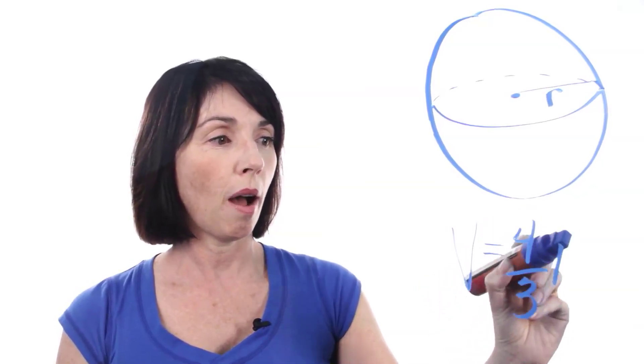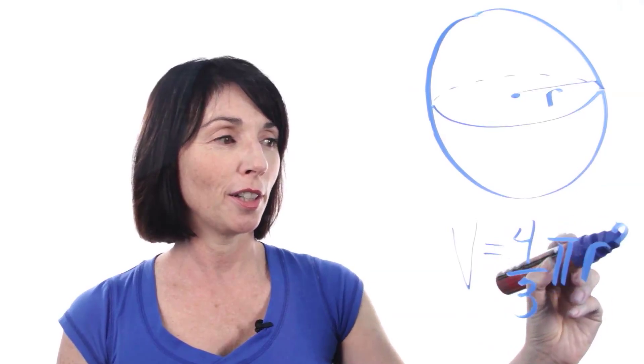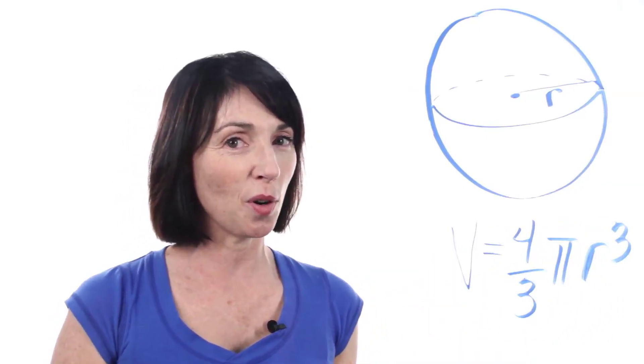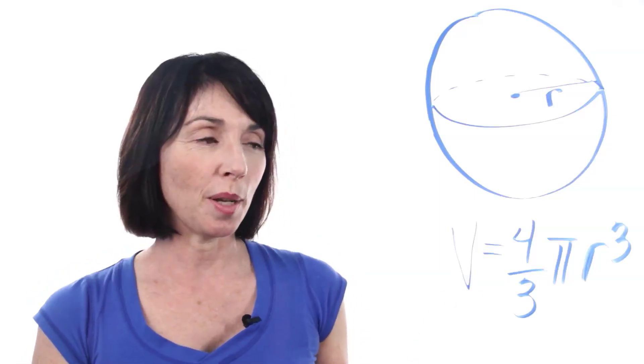Now, the volume of a sphere is equal to four thirds pi r cubed. I don't really have any quick and easy way for you to memorize this formula, but it's not too bad once you get used to it.